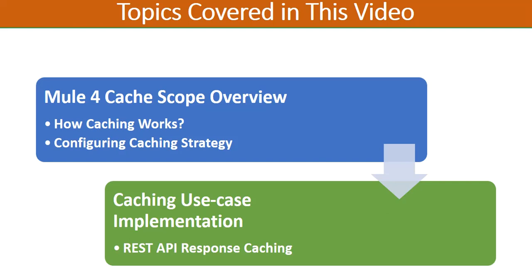If you want more advanced options for distributed deployments, we can go with separate caching strategies where we can have separate object stores. We can also configure additional parameters, for example the invalidation time for our cache. If you want the cache data to be refreshed every two hours, we can configure a time-to-live or expiration strategy for our Mule 4 cache.